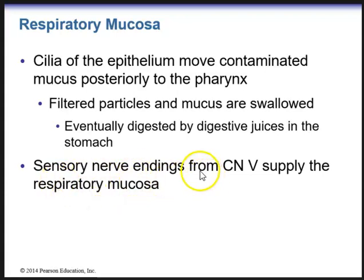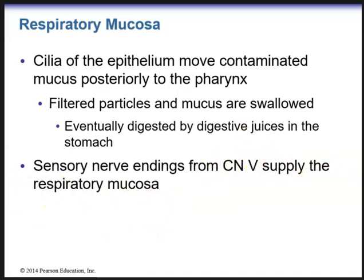Sensory nerve endings from cranial nerve 5 — the trigeminal nerve — also supply the respiratory mucosa. The trigeminal nerve is important because if we have irritating particles such as dust, pollen, or bacteria, it initiates the sneeze reflex so that we expel these particles out through our nose.